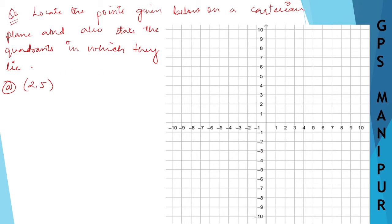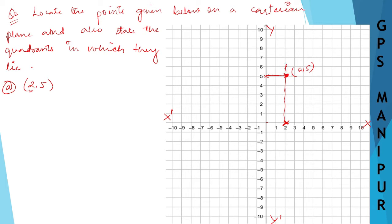The first point is (2, 5). So 2 on the x-axis is here. This one is x-axis, this is negative x, this is y, and this is negative y. The first number is always for x. So in x it is 2, and in y it is 5. This is the point we are locating — point P on the graph.